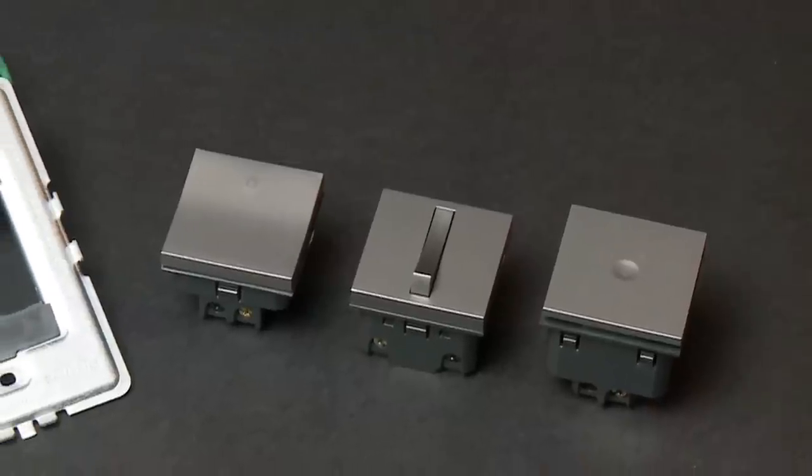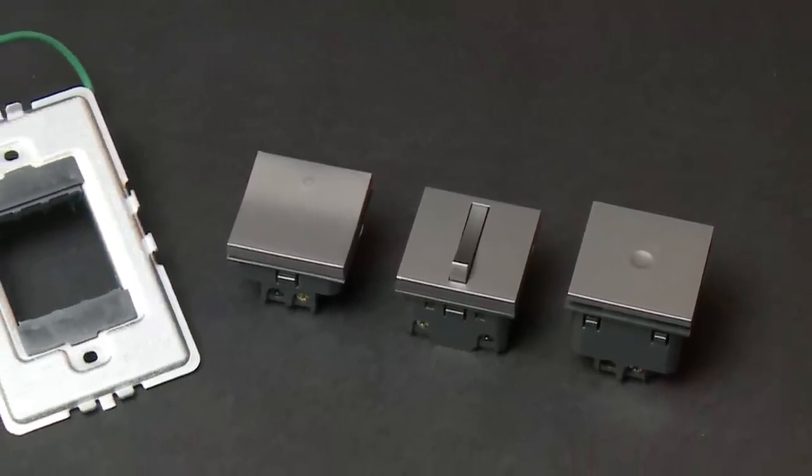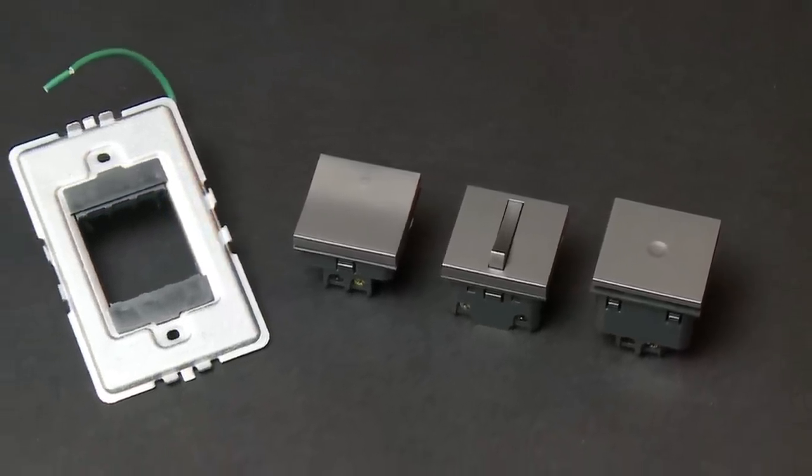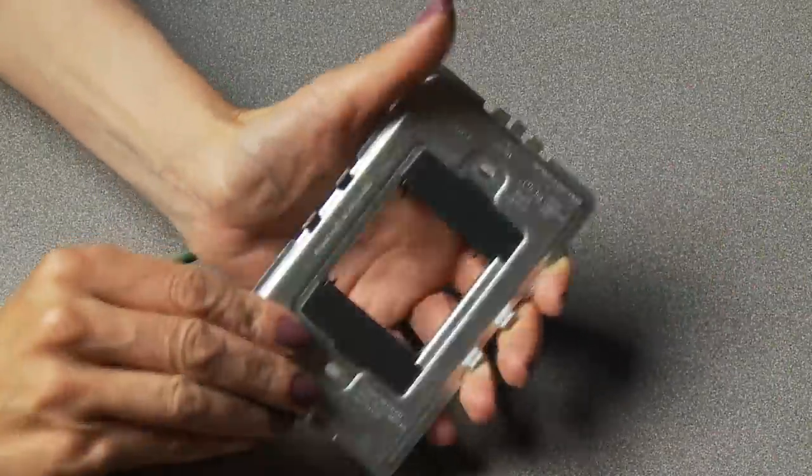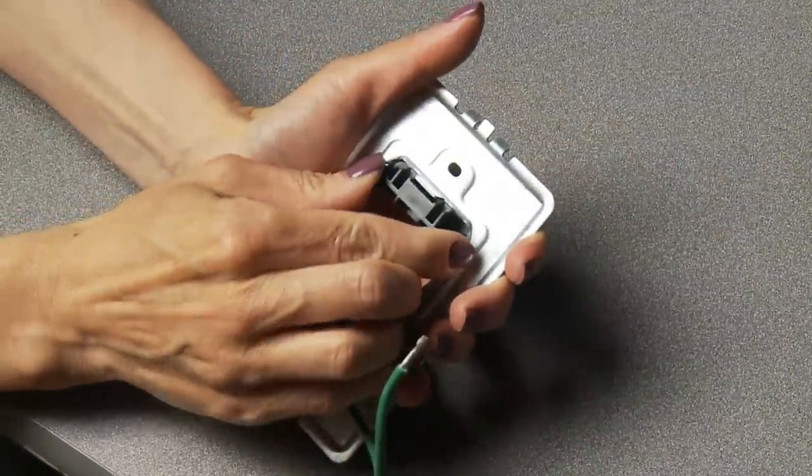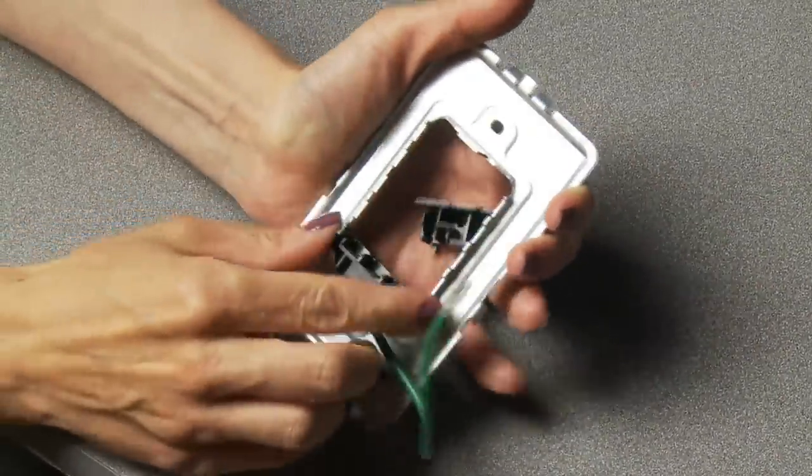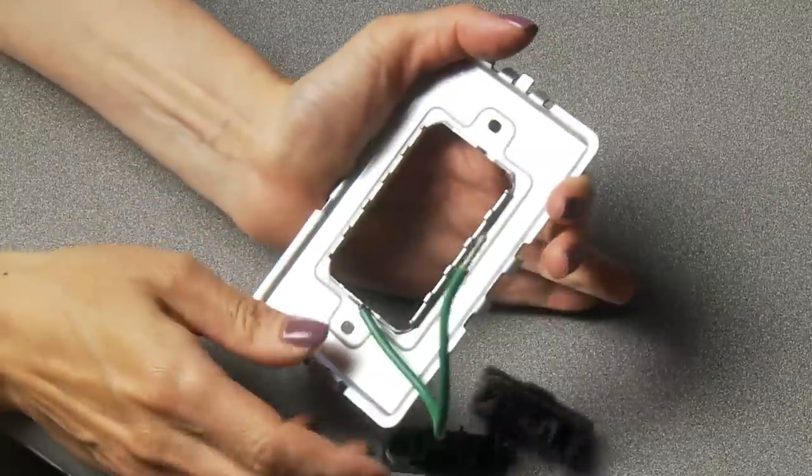If you are installing the paddle switch, whisper switch, or push switch, they should be left in place. Spacers are removed by pinching the sides on the back of the frame and pushing them through the front. You should remove both spacers.